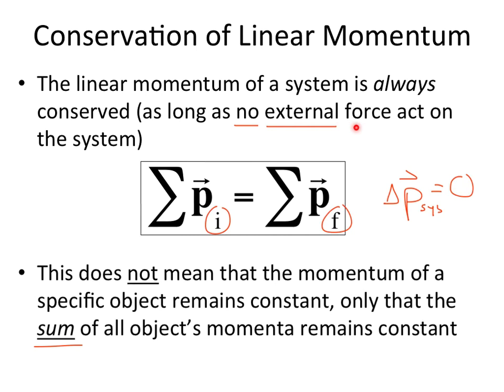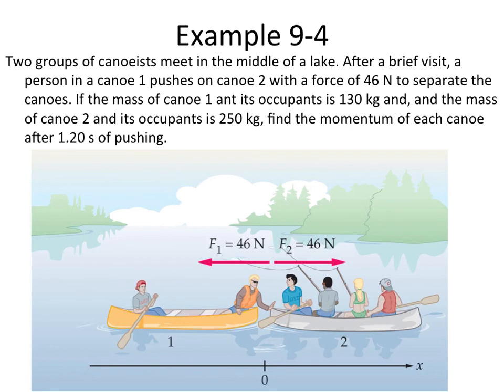In the next segment, we're going to do a problem that may look familiar from kinematics, but using linear momentum — example 9.4. You might recall when we talked about Newton's third law and action-reaction force pairs; we did a problem just like this. This group of two canoes is a system, and we'll find the momentum of the whole system is zero because there's only an internal force, no external force. Thanks for following along — I'll see you then.